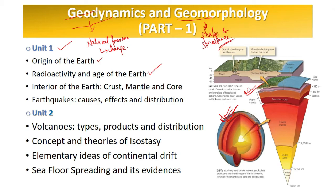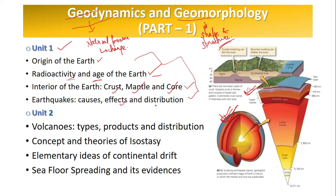You can note down these chapters so that when you revise you can tally from the syllabus. After the origin of the earth, we have radioactivity and the age of the earth — radioactivity is a process by which we can find the age of the earth. Then we'll learn about the interior of the earth, mainly divided into crust, mantle, and core. After that we'll cover earthquakes — causes, effects, and distribution.